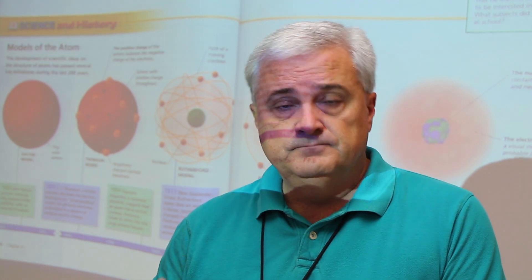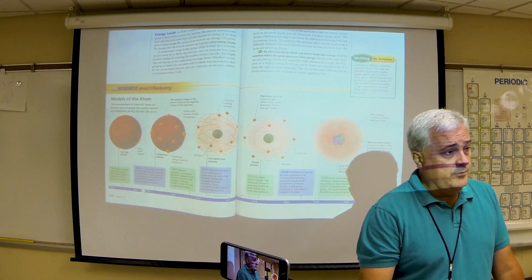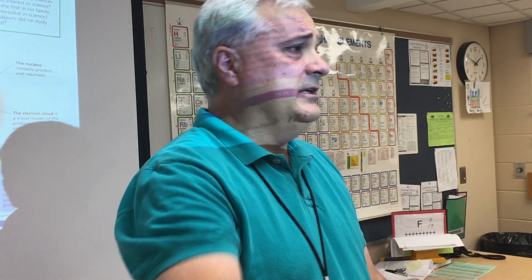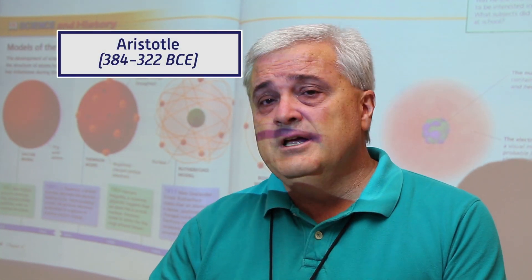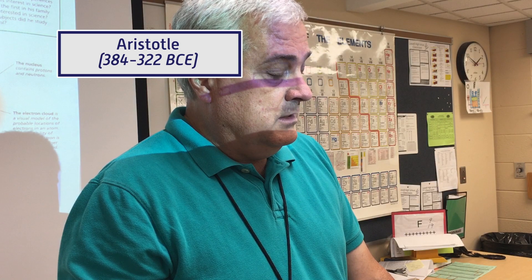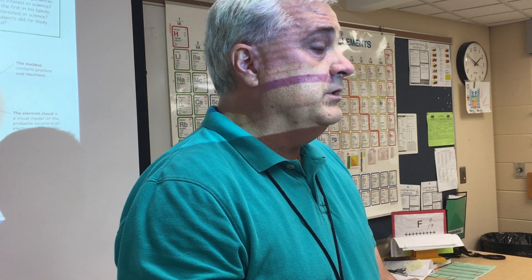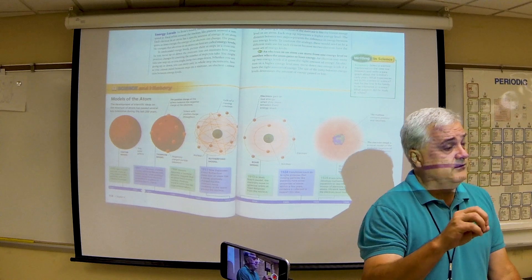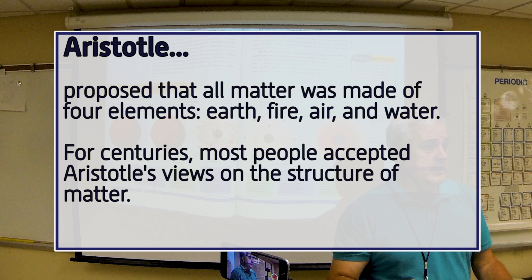Democritus had some really good ideas, but they didn't catch on because around his time there was another prominent person. This is a nice side note about how being famous automatically gives you credibility. Aristotle — almost everyone has heard of Aristotle — did not agree with Democritus. Because Aristotle was popular, his view was the one adopted. His view was that all matter was made of elements: air, fire, earth, and water.